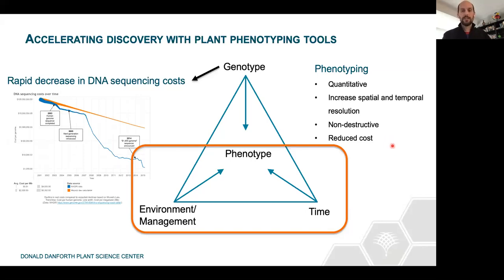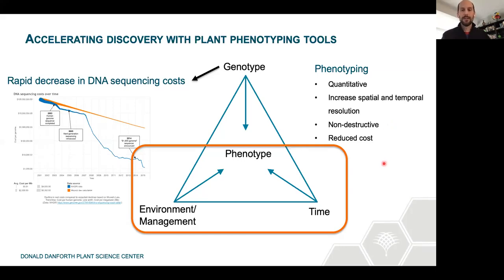With high-throughput phenotyping using imaging, our goal is to make phenotyping more quantitative and increase the spatial and temporal resolution that we can measure plant phenotypes at. We also have the advantage that we can measure phenotypes without destroying the plant material. All of these things help us reduce the cost of phenotyping — less people time measuring phenotypes, less materials required — and therefore we can have bigger experiments and measure things more frequently over time.